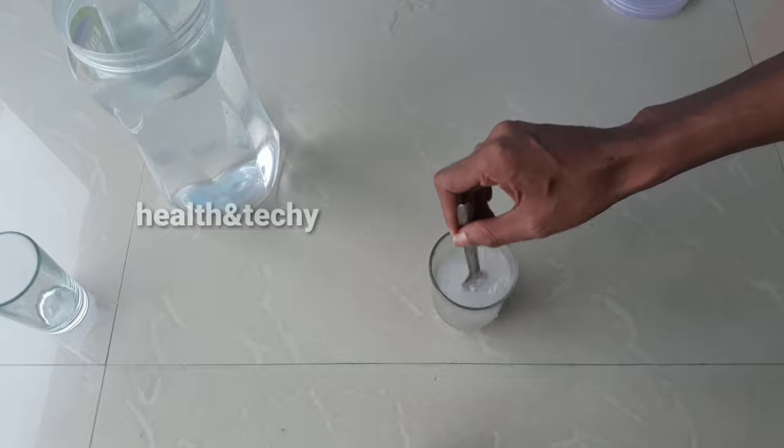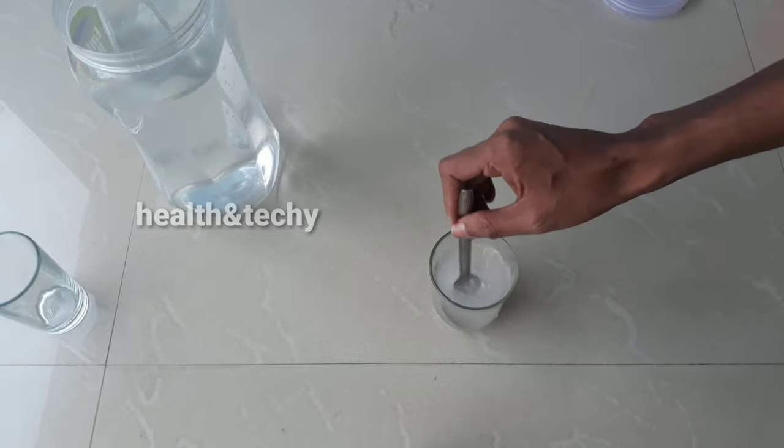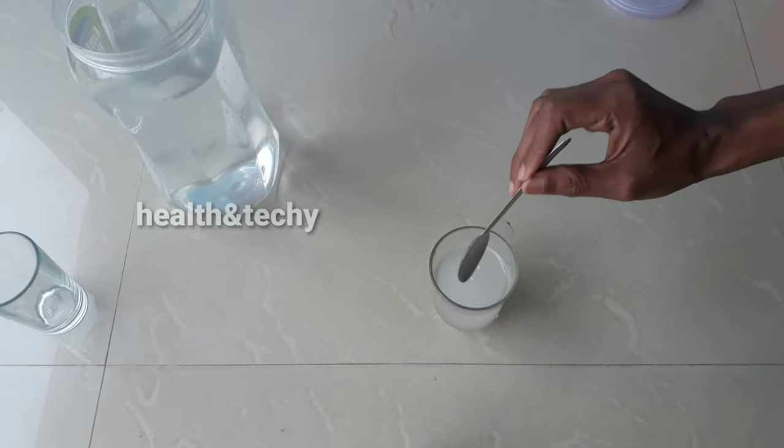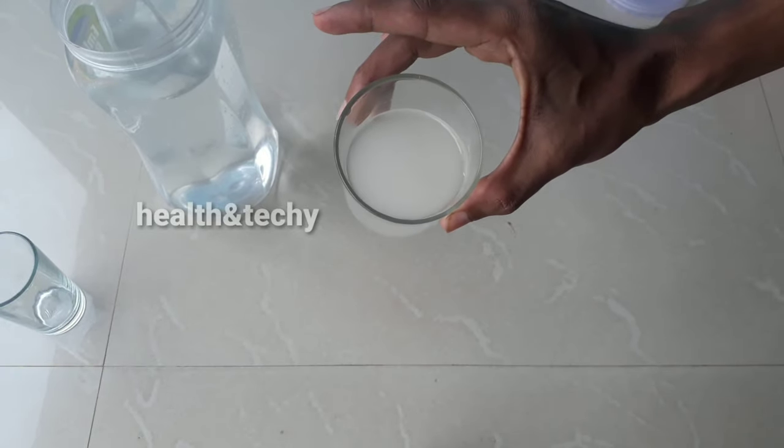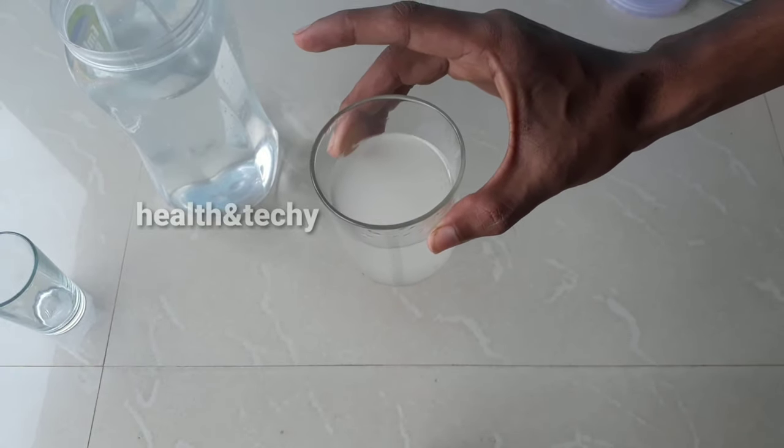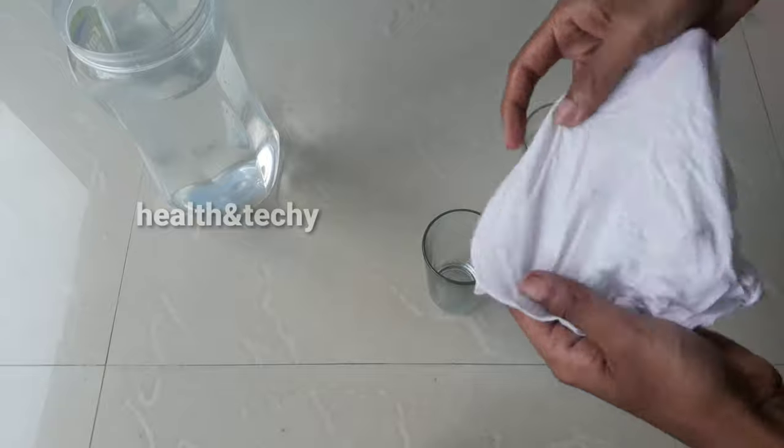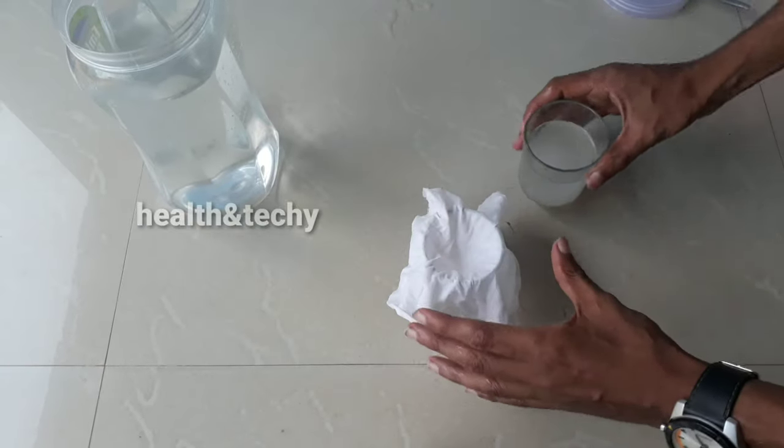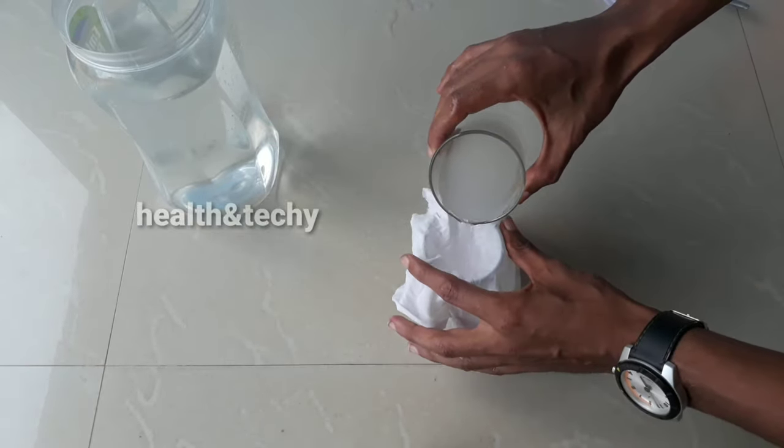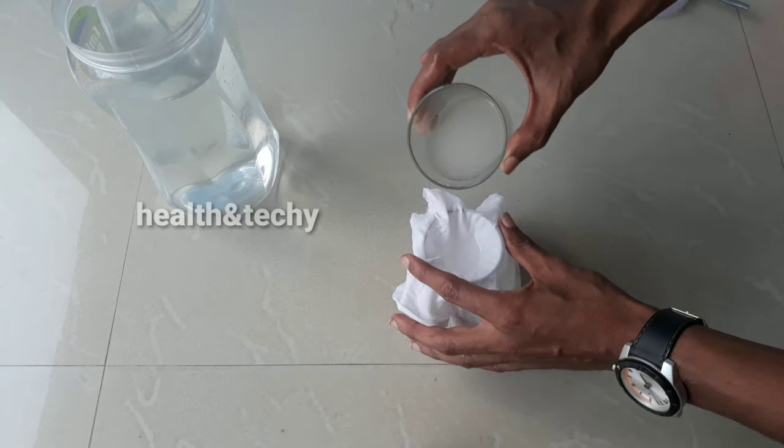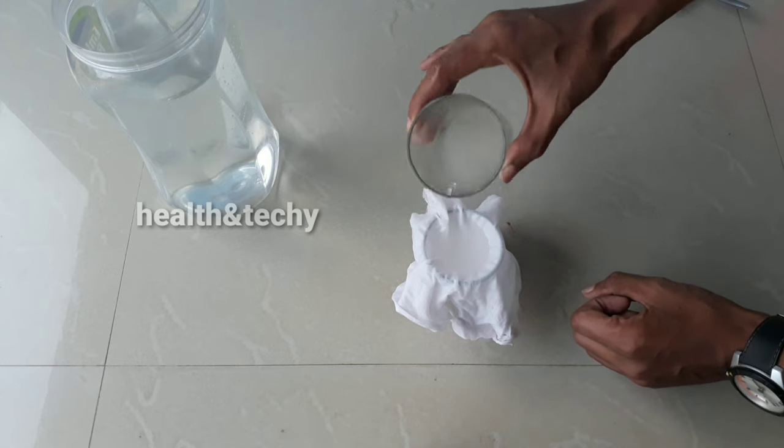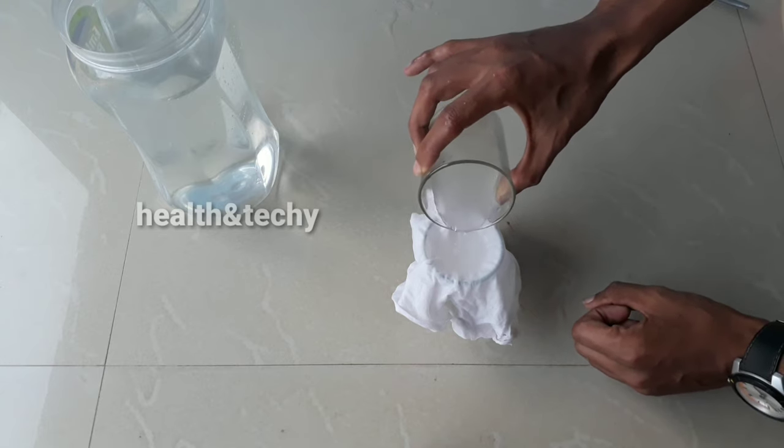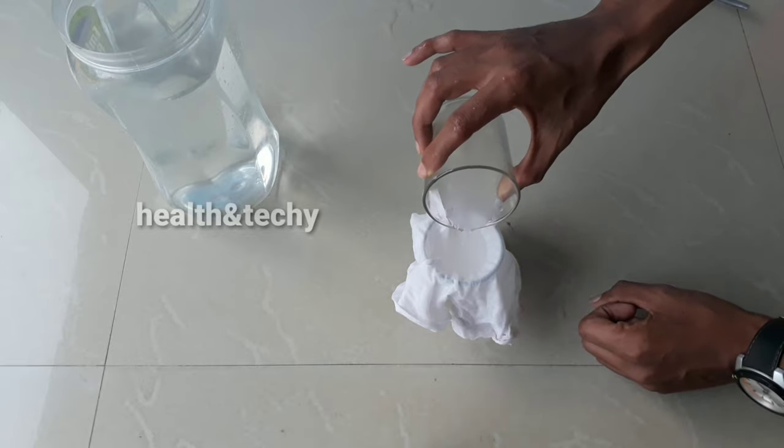You don't have to pour this solution directly into the moina culture; you have to filter this. I will show you how to filter the solution and use it as a feed for our moina culture. You have to take a cloth just like this, and then pour the yeast solution into this. The solution after filtering should be good to use as a feed for your moina culture.